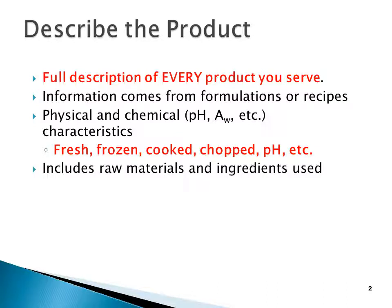It includes raw materials and ingredients used, and distribution requirements. Maybe you're at a large base or a large hotel that makes all the soup and sauces in one location — how do you get items from point A to point B? So that's all product description, longer than the recipe, which usually ends when you pull it out of the oven. This continues all the way up until you serve it to the guest.